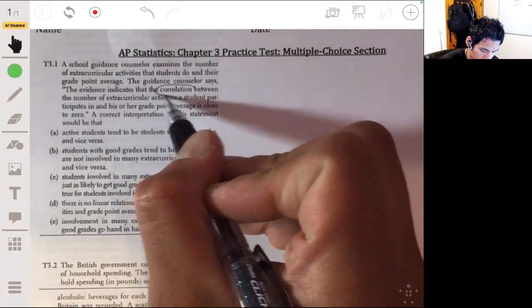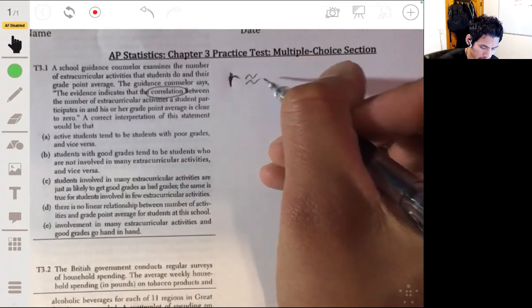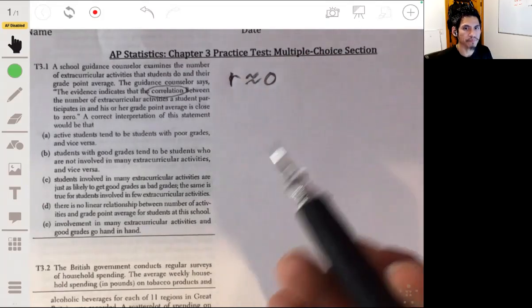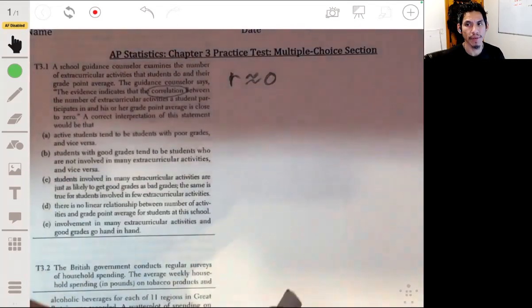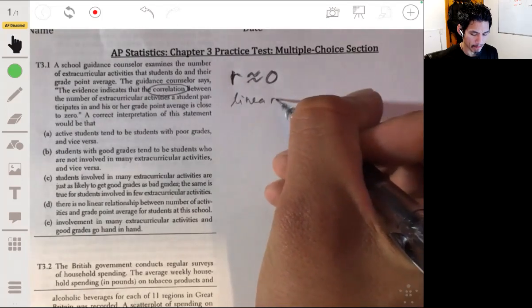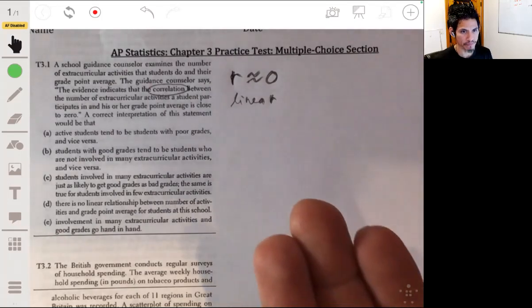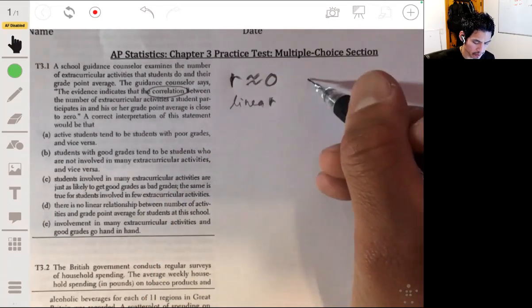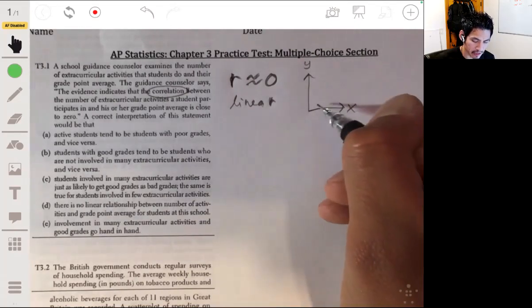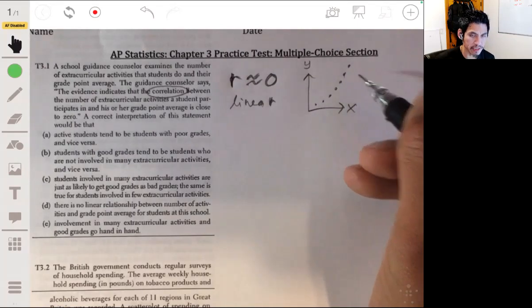When we are looking at the correlation or the correlation coefficient, which is usually represented by r, we're saying that r is about zero. This basically gives you a measurement of the strength of a linear relationship. What we can say is that there's basically no linear relationship between two variables—explanatory variable x and response variable y. But there could still be a curve relationship, like an exponential or something.